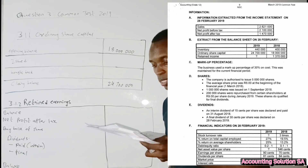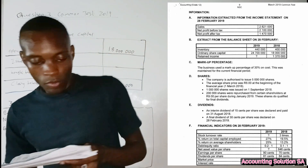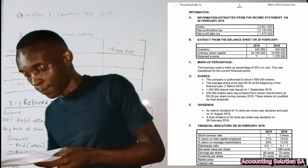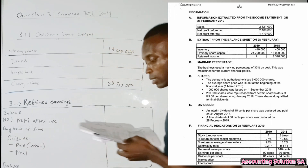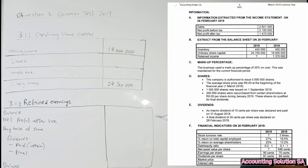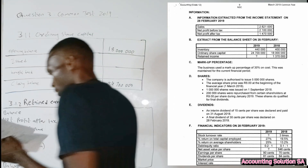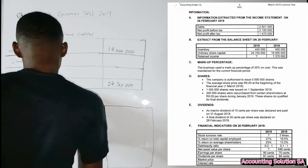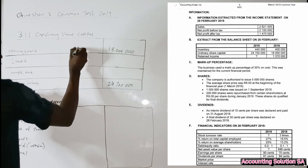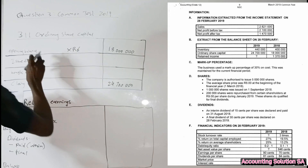Now let's go to note (d), which is related to shares. They said the company is authorized to issue five million shares. Authorized means the company is allowed to sell shares up to a maximum of five million. Number two: the average share price was R6 at the beginning of the financial year, meaning the share price average was R6 at the beginning. We have to write that here, which means we now have to find out how many shares there were at the beginning.